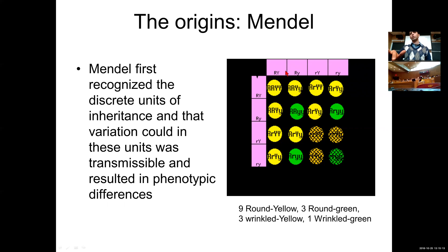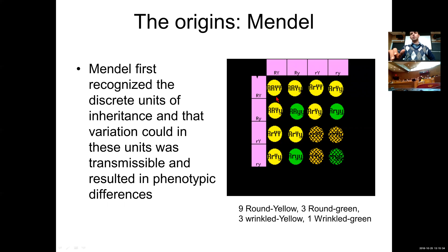What Mendel found was that when you crossed these parental phenotypic characteristics, you ended up with a very specific pattern in the count of offspring. Without knowing anything about the molecular basis of inheritance, he arranged them in a table that could actually explain the offspring and the independent inheritance of individual traits.